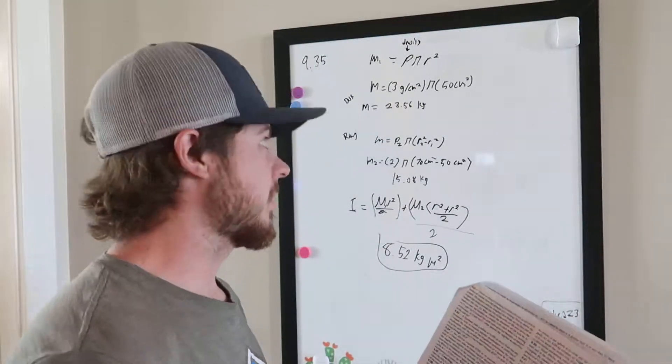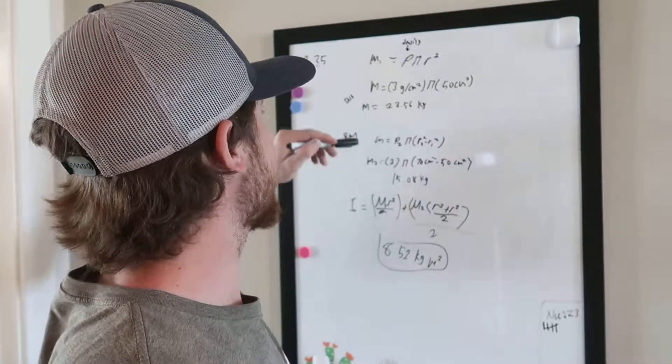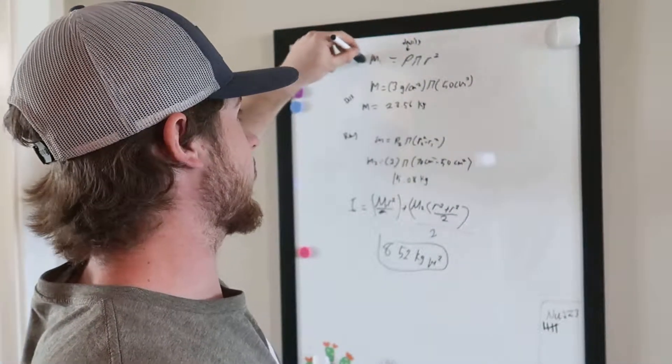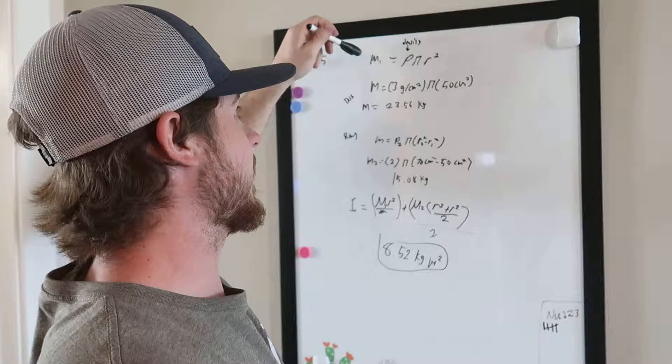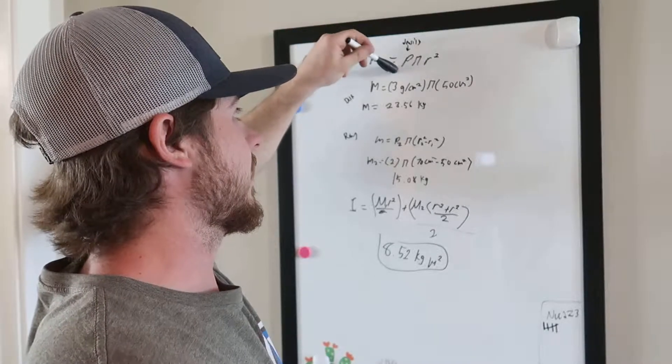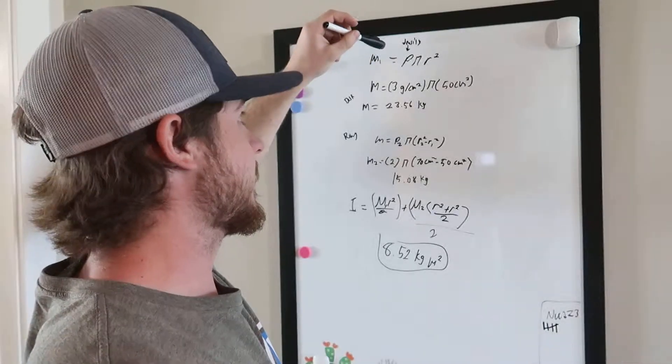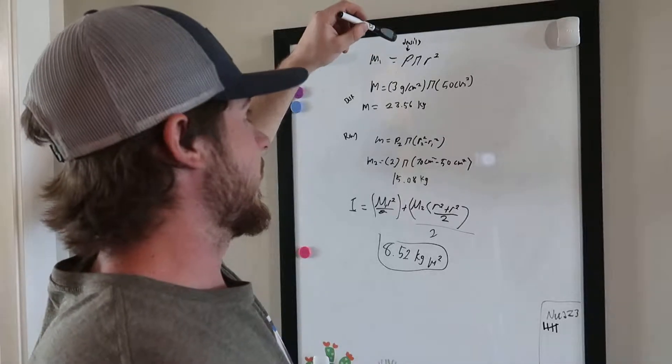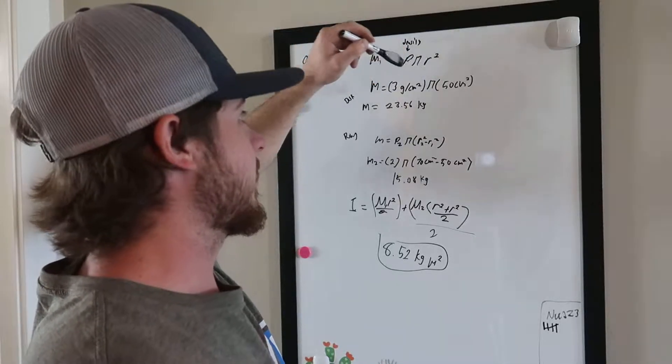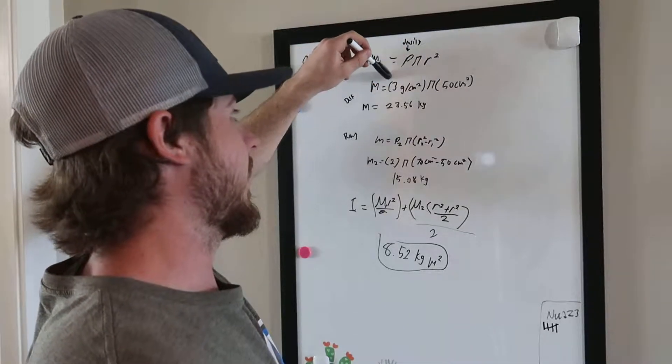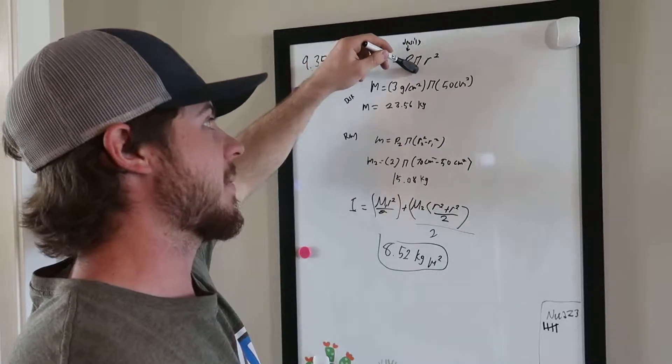We're going to use this equation to find the mass of the disk. It equals the density of the disk multiplied by π multiplied by the radius squared. So we get 3 grams per centimeter squared multiplied by π multiplied by 50 centimeters.